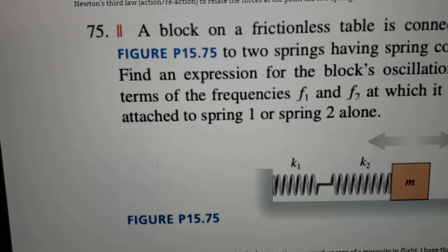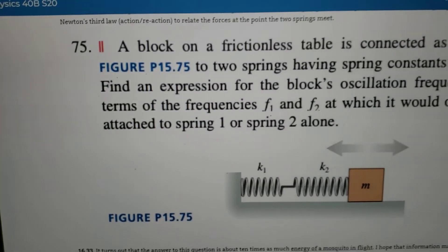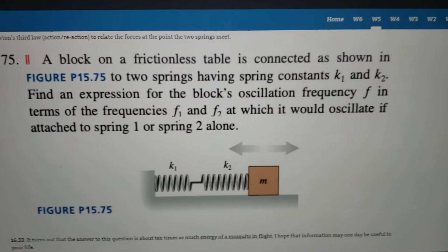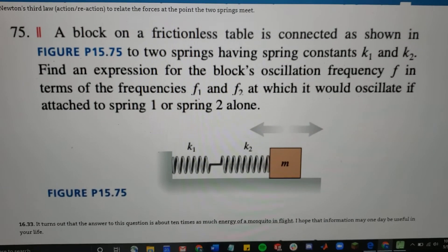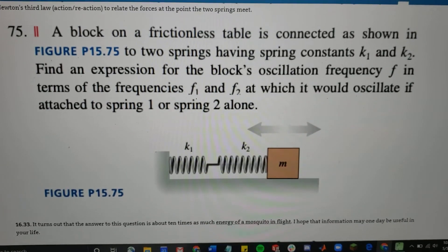Alright guys, this is problem 15.75 for week 5. It says a block on a frictionless table is connected as shown in the figure below to two springs having spring constants k1 and k2.